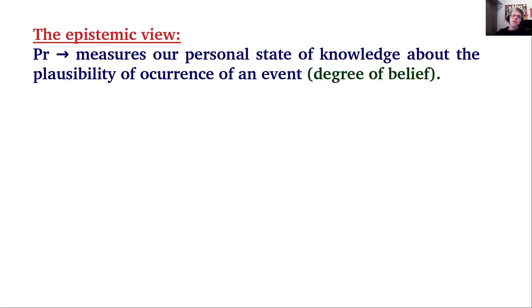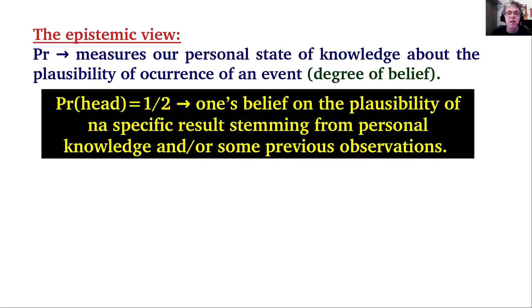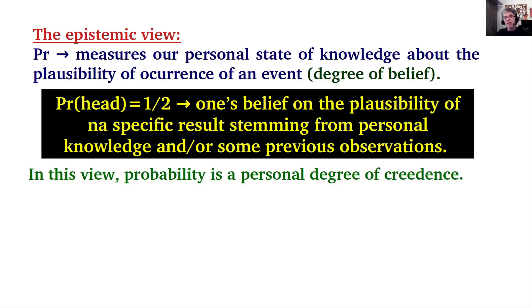The second view of probability is the epistemic view. Here probability measures a personal state of knowledge about the plausibility of occurrence of an event. It measures a degree of belief, or my personal degree of belief, that something may happen, again as a real number in the unit interval. When I say the probability of obtaining heads equals one half, this is my own personal belief on the plausibility of a specific result stemming from any source of knowledge, which could be my own personal knowledge, gossip, or some previous observations of tossing that coin. In this view, probability is a personal degree of credence on the occurrence of a given event.